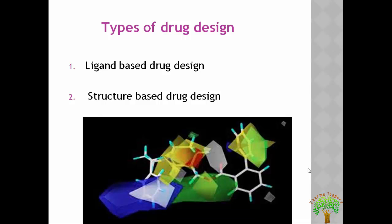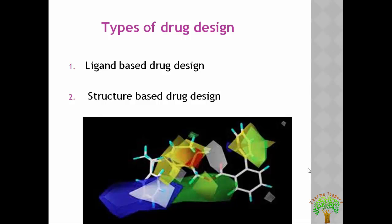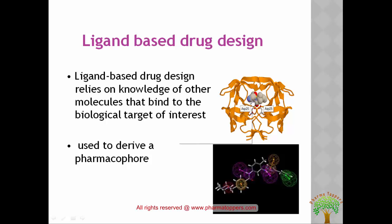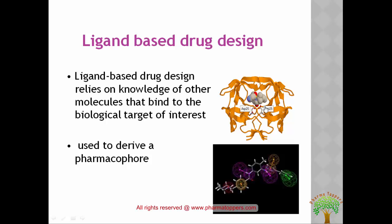If the drug design process uses structural information of the ligand going to bind to the active site of the receptor, it is called ligand-based. If it uses the structure of the receptor molecule, it is structure-based drug design. Ligand-based drug design relies on the knowledge of other molecules that bind to the biological target of interest and is used to derive a pharmacophore. A pharmacophore is a set of features collectively responsible for the therapeutic action exerted by a class of chemical compounds. Here we can observe this pharmacophore generated by the design technique, along with the macromolecule showing different amino acids like aspartate 25 bound with the drug molecule.